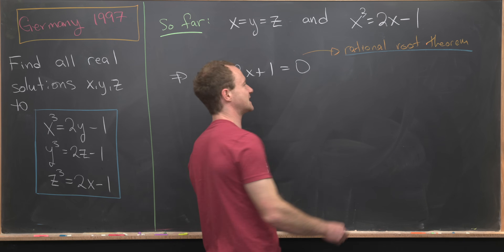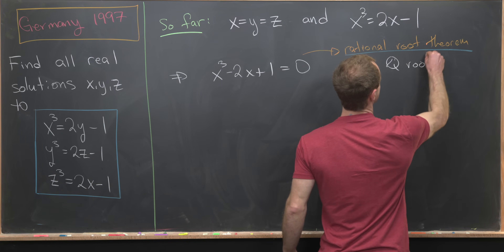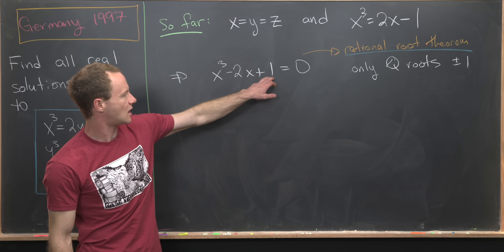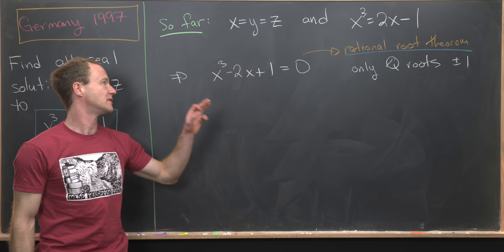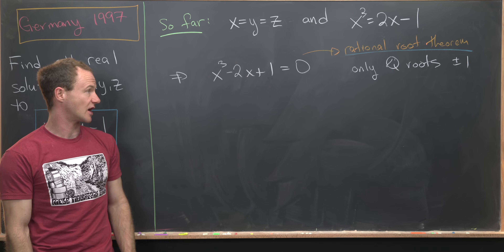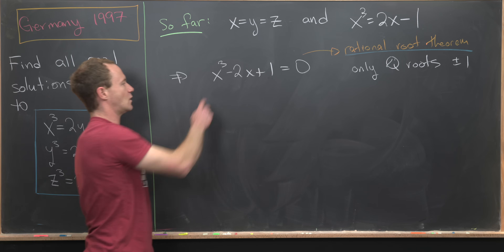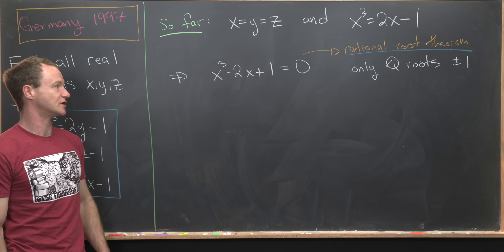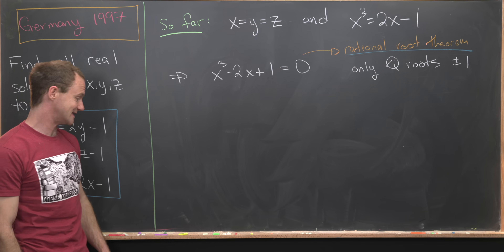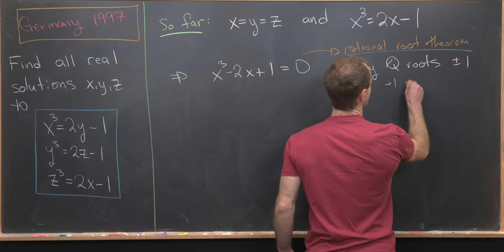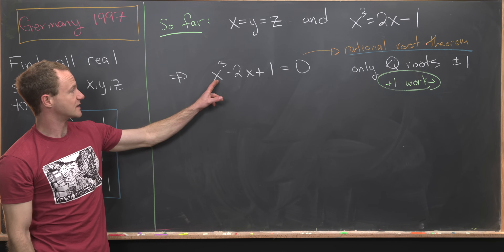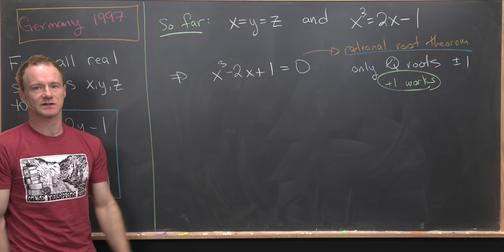The rational root theorem says the only rational roots will be plus or minus 1 — that's plus or minus all factors of the constant term divided by all factors of the leading term, and in this case they're both 1. It's easy to check that minus 1 is not a root. But plugging plus 1 in gives us 1 minus 2 plus 1, which is clearly equal to 0. So plus 1 works.